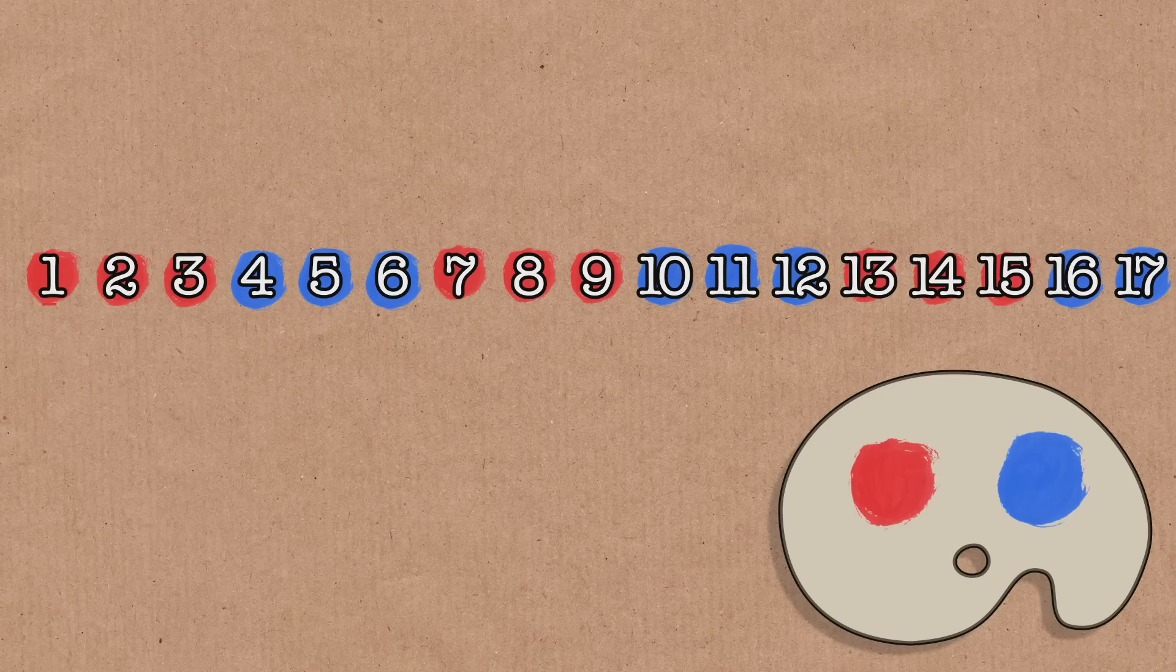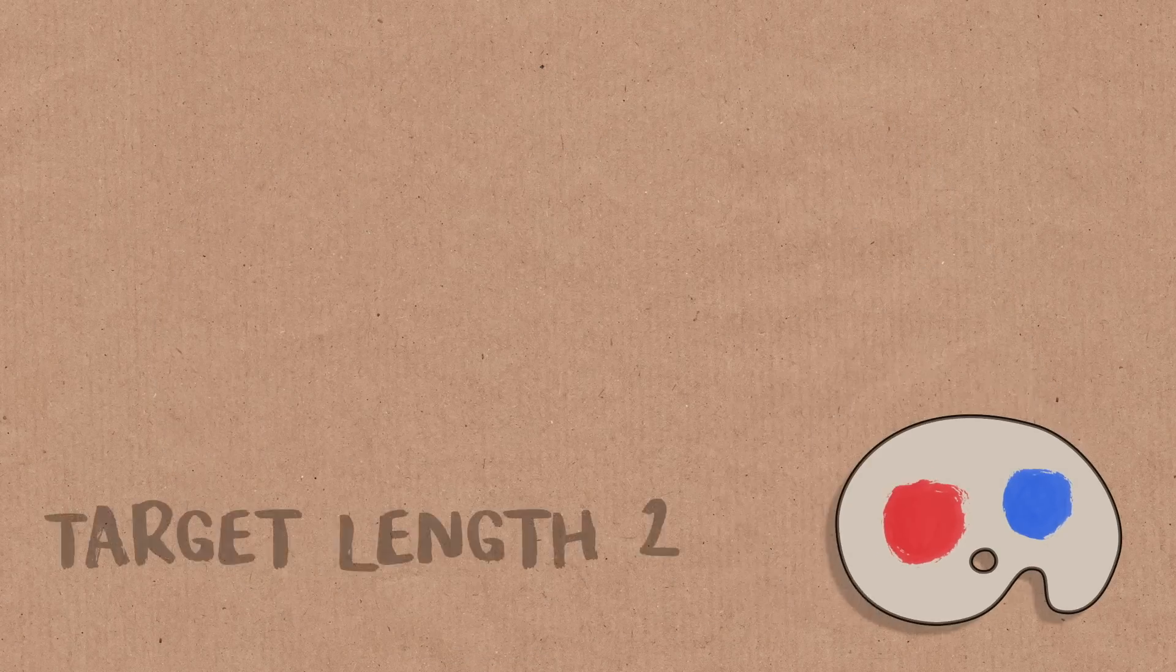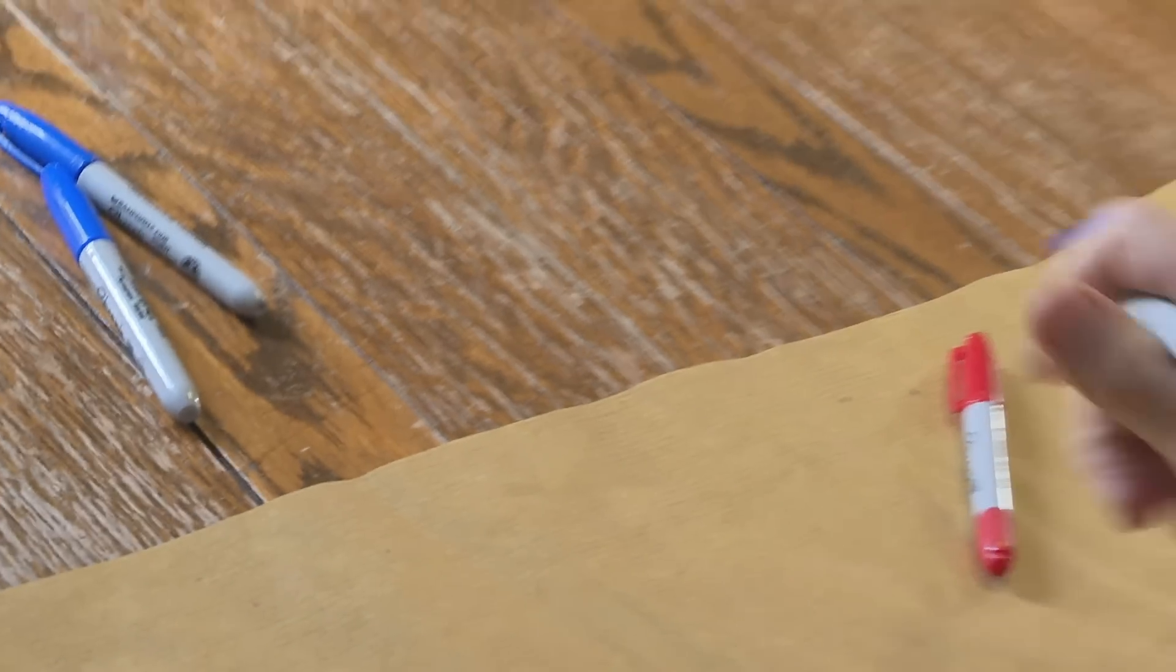Well, I thought I might start with the very, very simplest case, which is, what happens if you just want to find an arithmetic progression of length two? So if you think about that for a second, you realize that is actually extremely easy. Let's suppose we have two colors, red and blue.